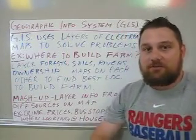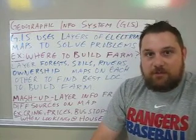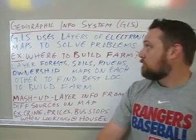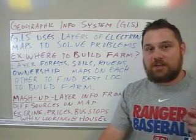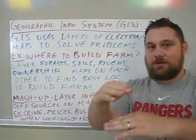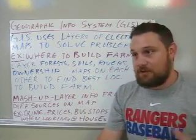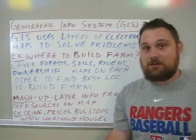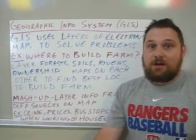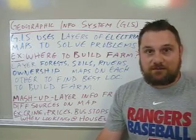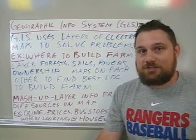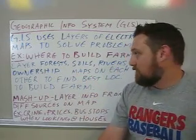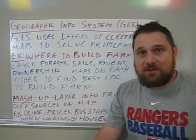Finally, we have Geographic Information Systems, or GIS. Just about every major city, including Mesquite, has a GIS department — people whose jobs are to work with this type of system. It is a software tool where you take layers of electronic maps and layer them on top of one another to get a total view of several different things. For example, if you're a farmer deciding where to build, you could layer a map of forests, a map of soils, a map of rivers, and a map of land ownership to determine the best location.